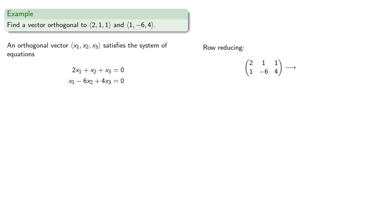Row reducing gives us—and since our pivots are 1 and 13, it's convenient to include a factor of 13 in our free variable. So we'll let x3 be 13s.